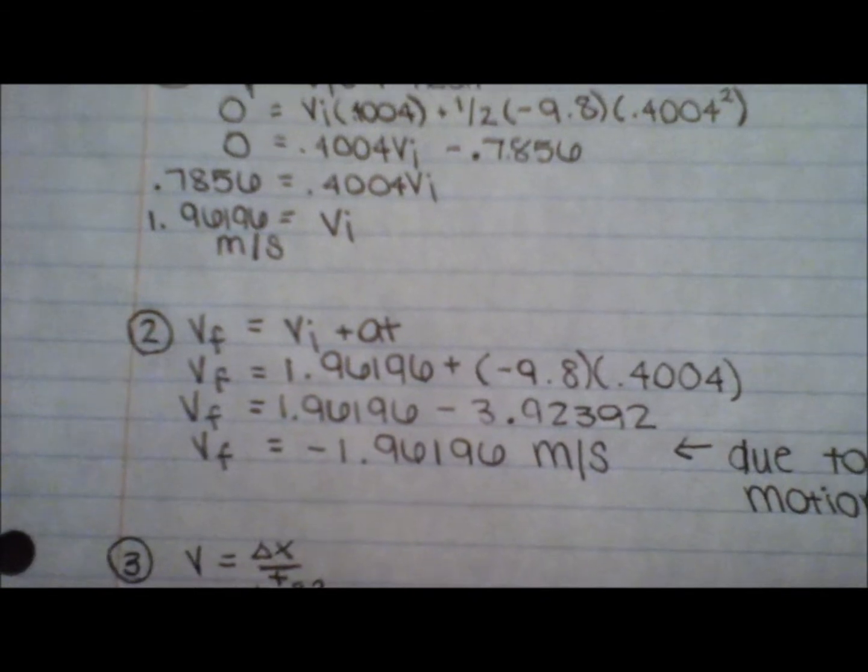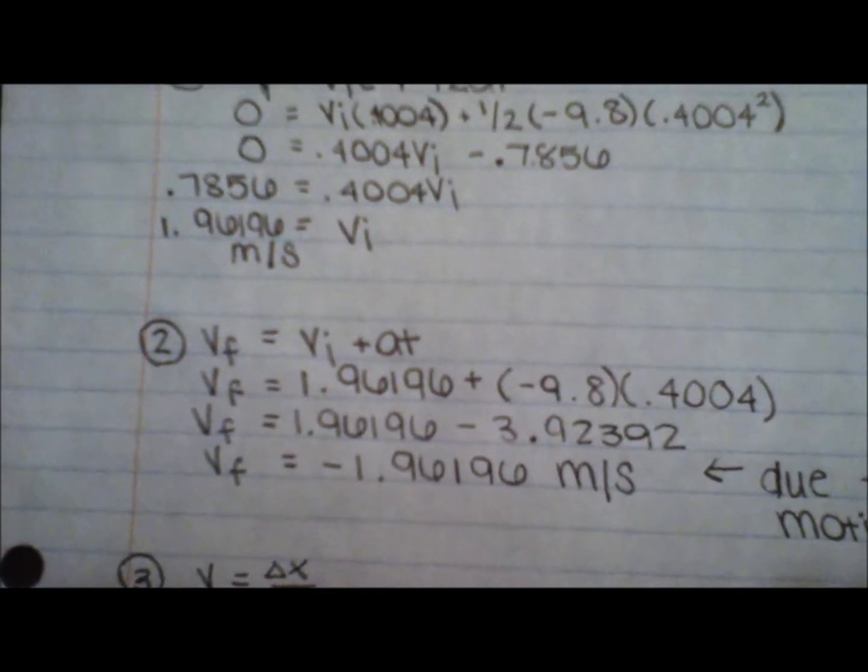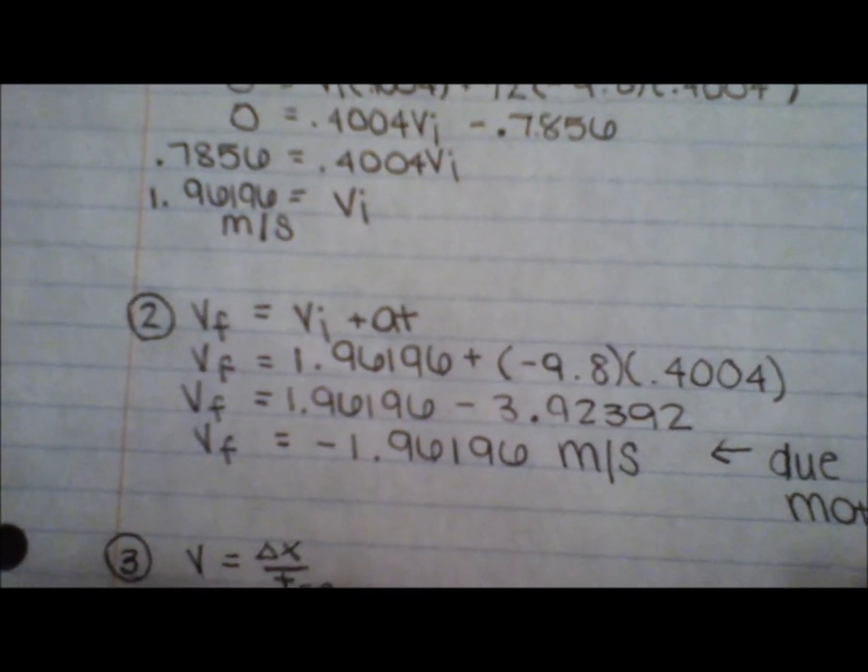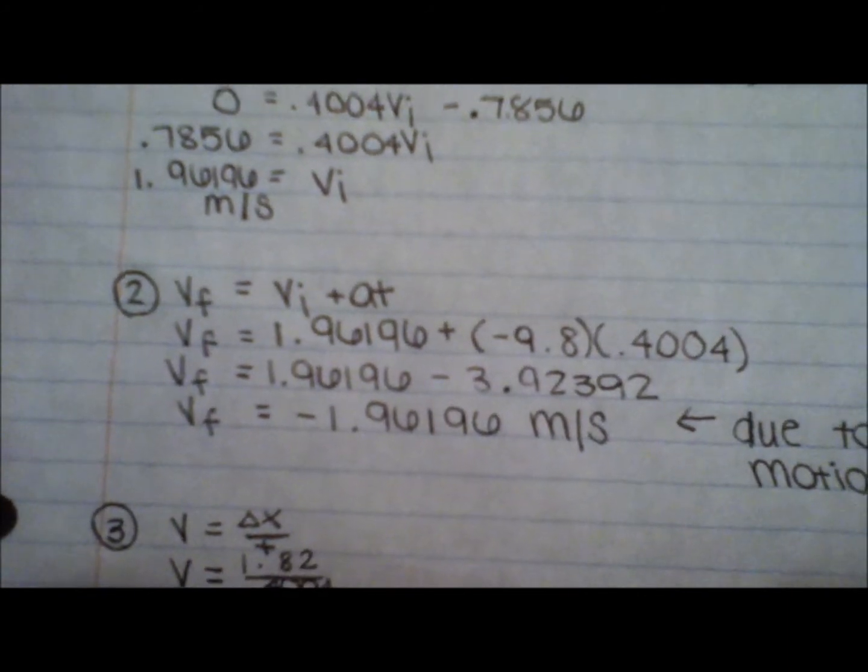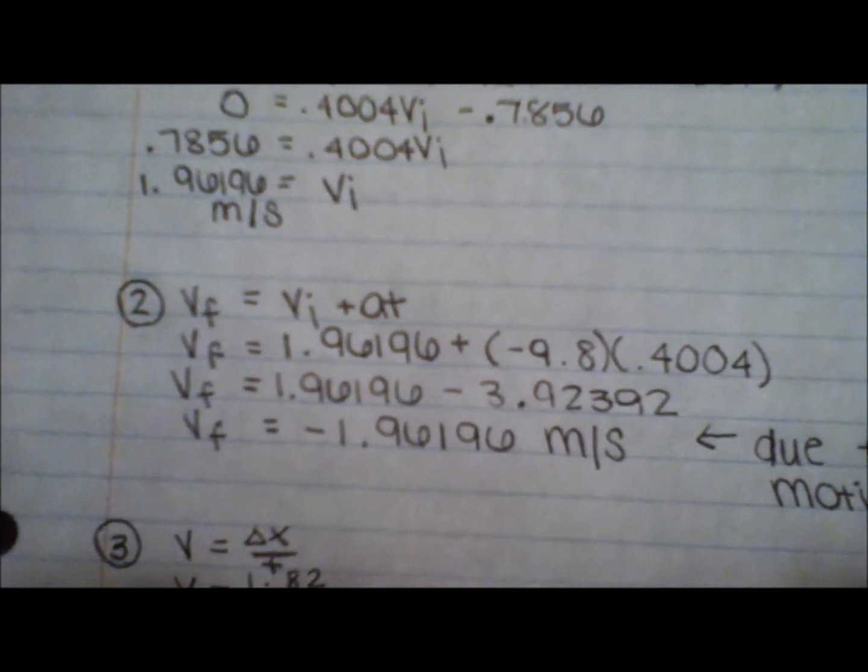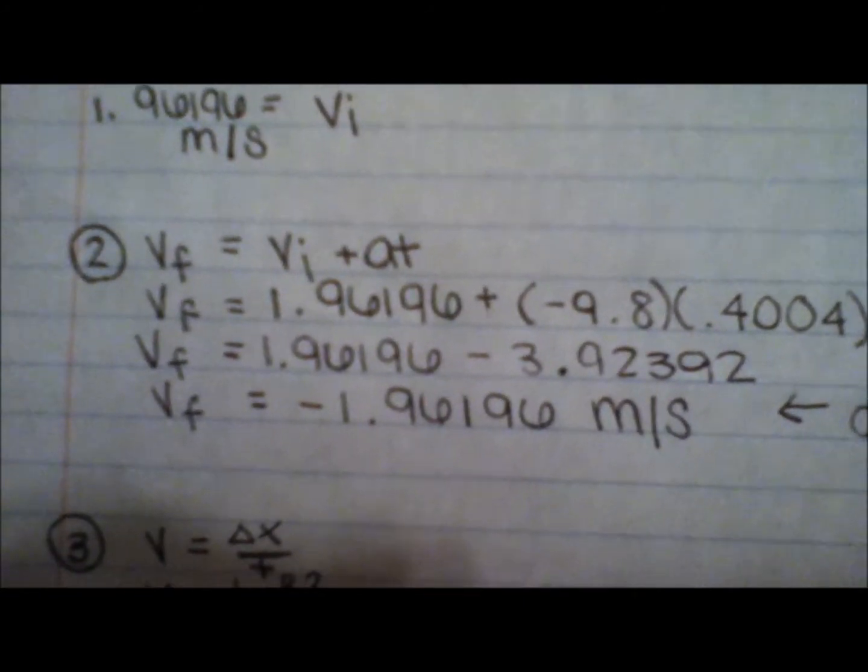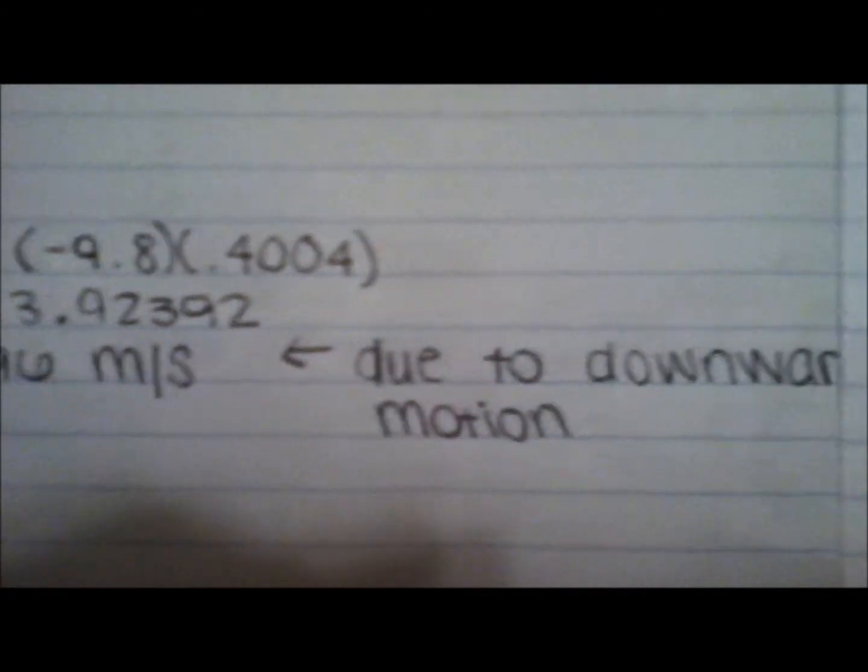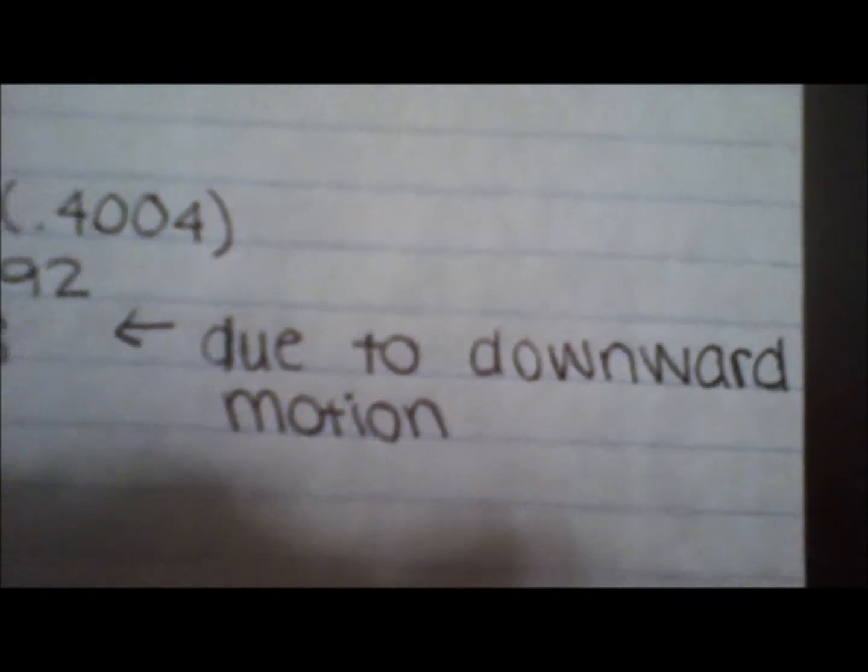take the velocity initial and substitute it into another constant acceleration motion equation to solve for the remaining variable, which in this case is the velocity final. The velocity final will be negative, due to the downward motion when Alexa finishes her dive roll.